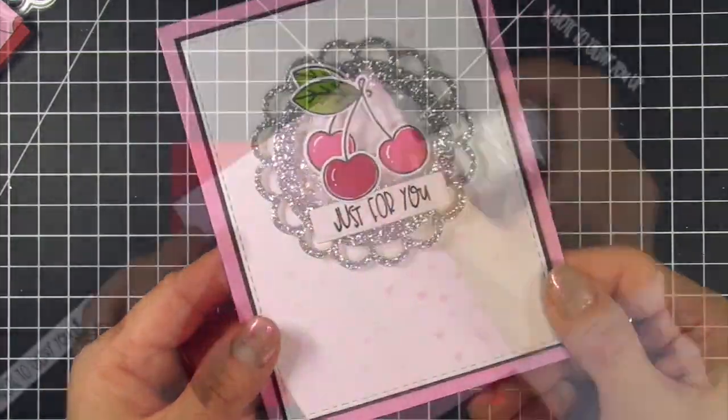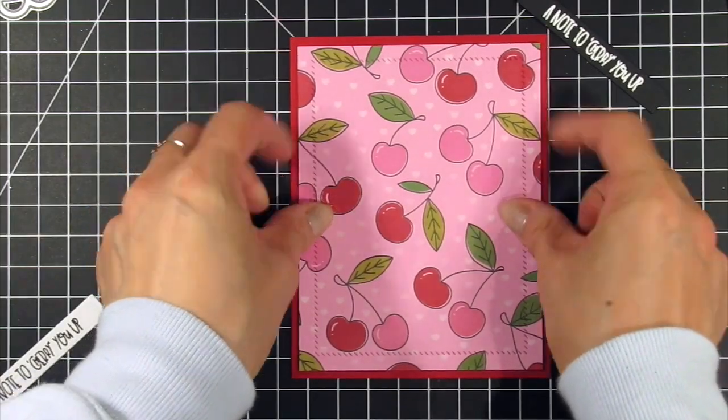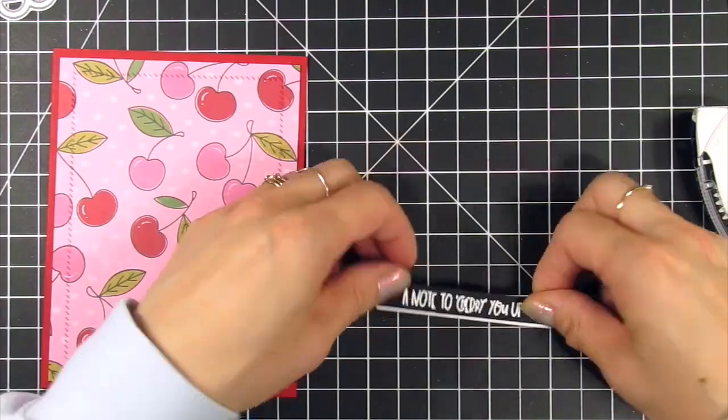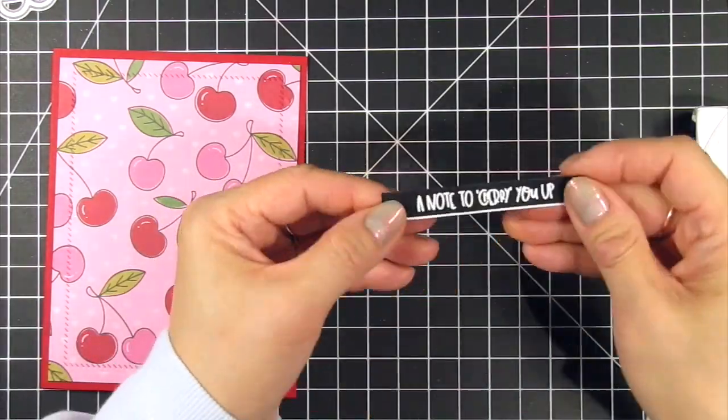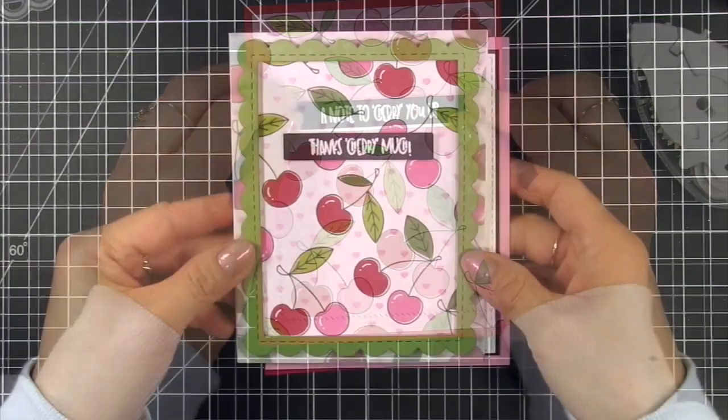Finally I secured the pink panel to its cherry pop card base and layered a white strip behind the black sentiment strip that reads 'a note to cherry you up'. I kept this card super flat which isn't something I normally do. I really wanted to make it dimensional but it's nice to have some flat cards for easy mailing.